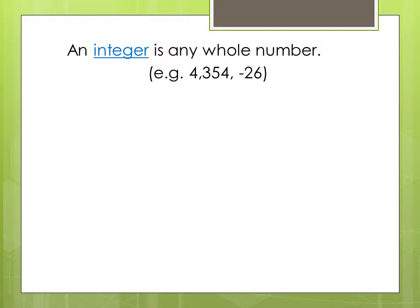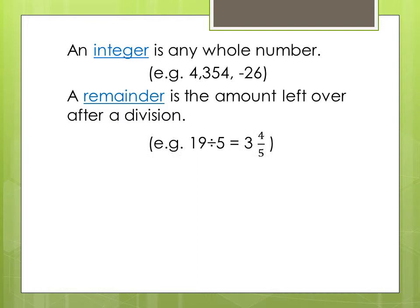First, we will define a greatest common divisor but to do so we will define an integer and a remainder. An integer is any whole number such as 4, 354, and negative 26. And the remainder is the amount left over after division.